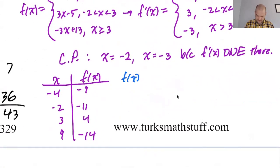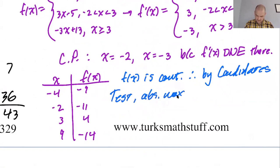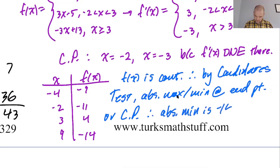I'm going to write up a solution here and use a different color. So I'm going to say f of x is continuous. Therefore, by candidate's test, absolute max min at endpoint or critical point. Therefore, absolute min is negative 14 at x equals 9. Absolute max is 4 at x equals 3.